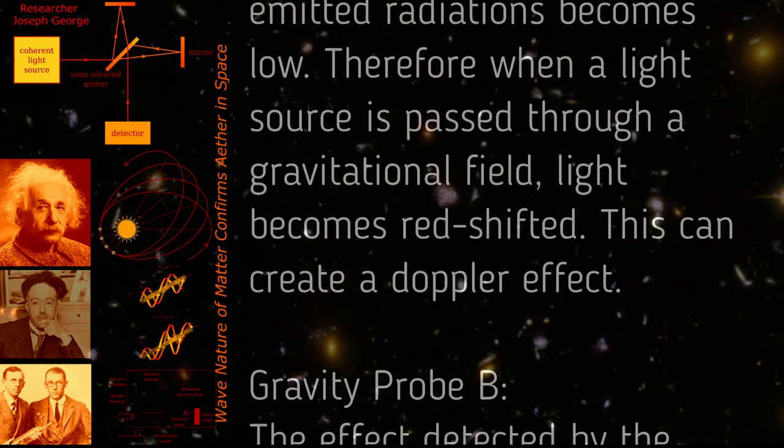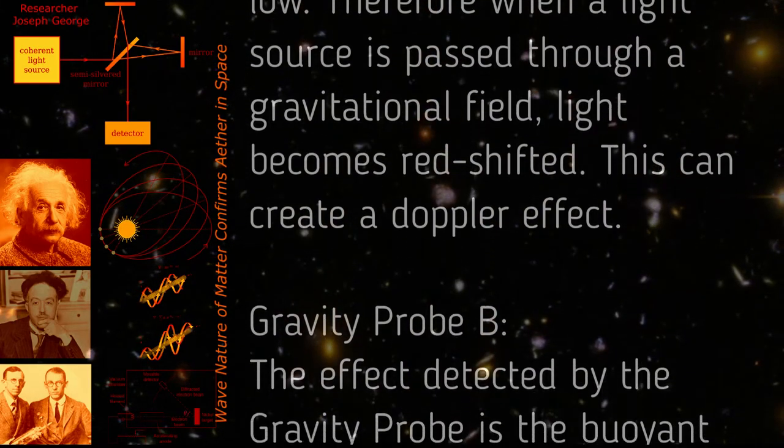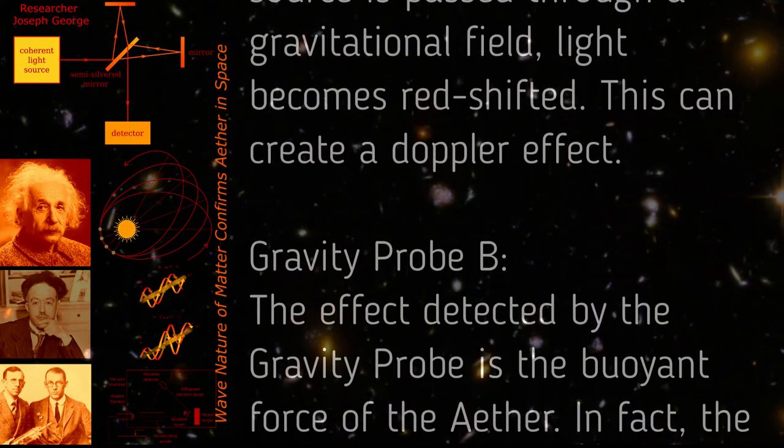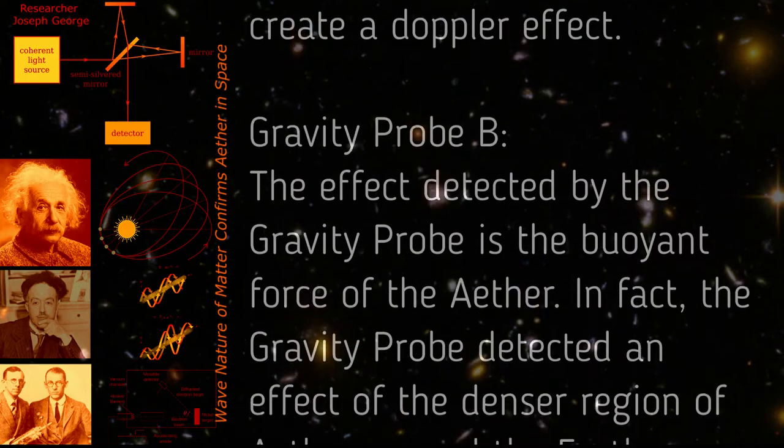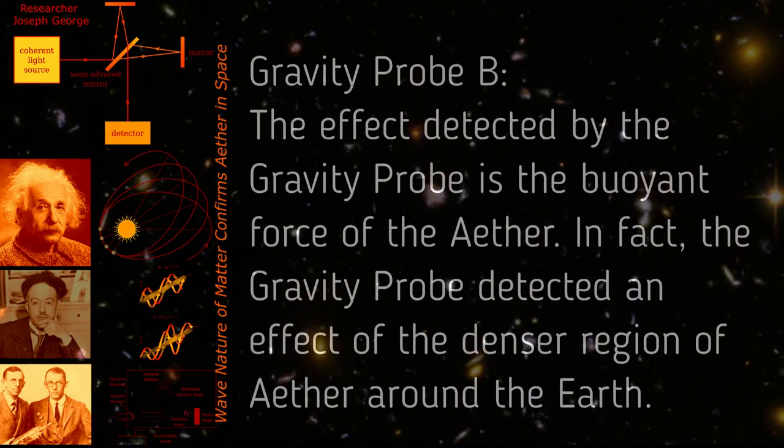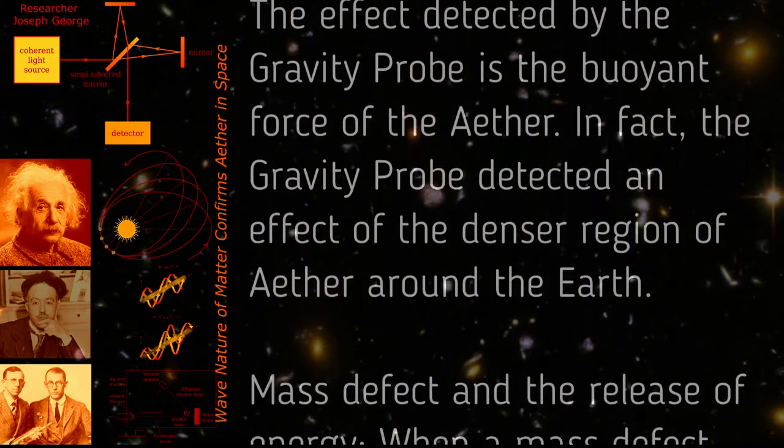Gravity Probe B: The effect detected by the Gravity Probe is the buoyant force of the ether. In fact, the Gravity Probe detected an effect of the denser region of ether around the Earth.